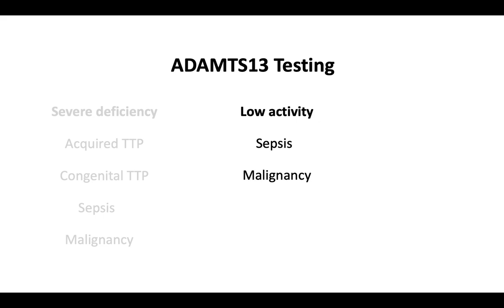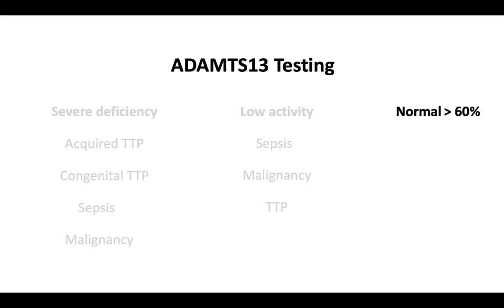However, low activity can also be seen in TTP that has been partially treated due to earlier transfusion or treatment with steroids. Therefore, do not dismiss the diagnosis of TTP on the basis of low ADAMTS-13 activity alone without careful review of the clinical history. Finally, if ADAMTS-13 activity levels are normal — that is, greater than 60% — this effectively rules out the diagnosis, and you can be confident that no matter the underlying cause, it is not TTP.